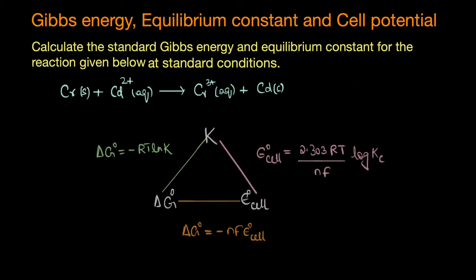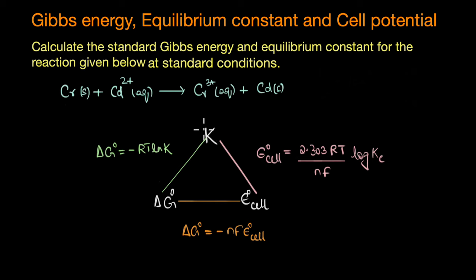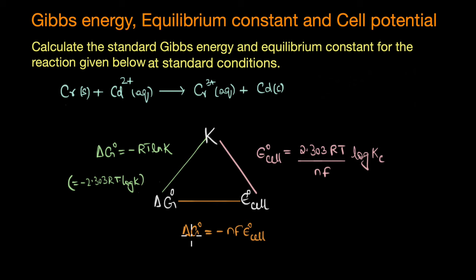To conclude, the three quantities — standard Gibbs free energy, equilibrium constant, and standard cell potential — are interrelated as follows: E°cell relates to Kc via E°cell = (2.303RT / nF) log Kc; ΔG° relates to Kc via ΔG° = −RT log K; and ΔG° relates to E°cell via ΔG° = −nFE°cell.